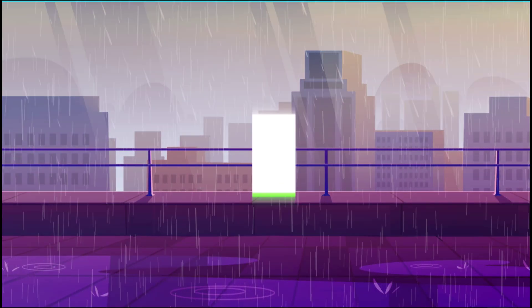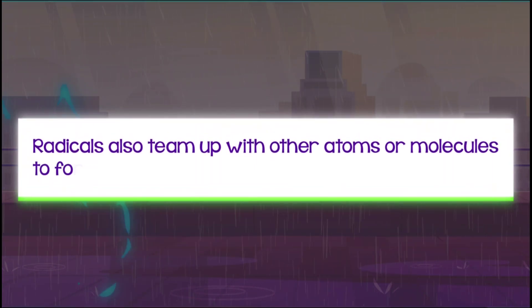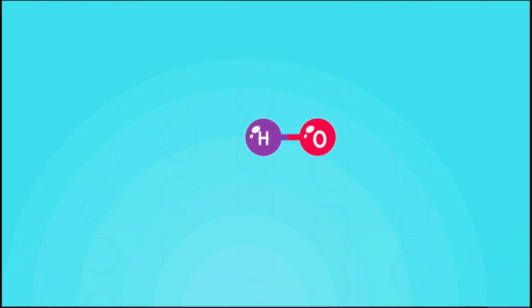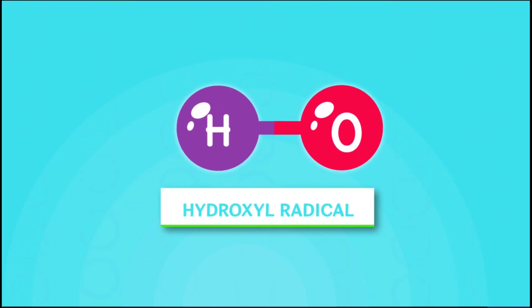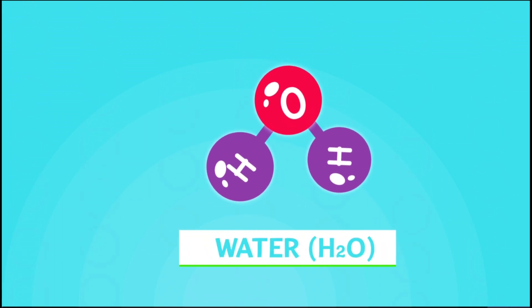Radicals can also team up with other atoms or molecules to form compounds. For example, the hydroxyl radical can join with a hydrogen atom to form water, H2O. In the next lesson, we'll be looking at more examples of radicals.